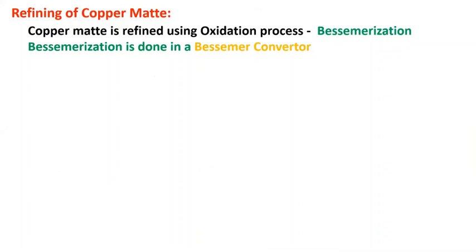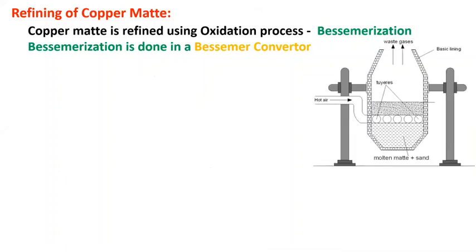Copper matte, the crude copper metal, is now subjected to refining. Refining is done by an oxidation process called bessemerization, which is carried out in a Bessemer converter.